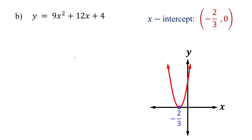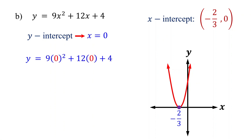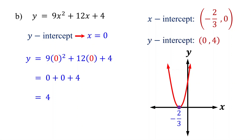Now let's find the y-intercept. Remember, the y-intercept occurs when x equals 0. Set x to 0 and solve for y. This simplifies to 4. Therefore, the y-intercept of the parabola is the point (0, 4). It crosses the y-axis at this point. By the way, the y-intercept always equals the constant term.